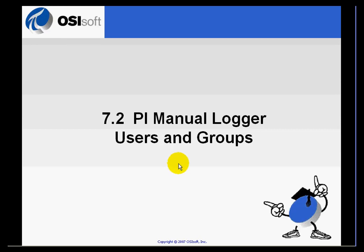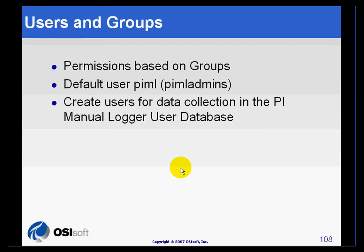PI Manual Logger Users and Groups is a central feature of its security. The permissions are based on groups. We know that there is a default user called PIML — that's the user name and also the password — which we can use to create users for data collection and full control.